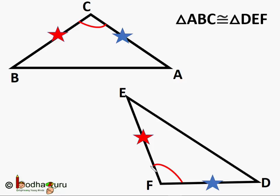Therefore, we can say: if three sides of one triangle are equal to the three sides of another triangle, the two triangles are congruent. The SSS rule is proved.